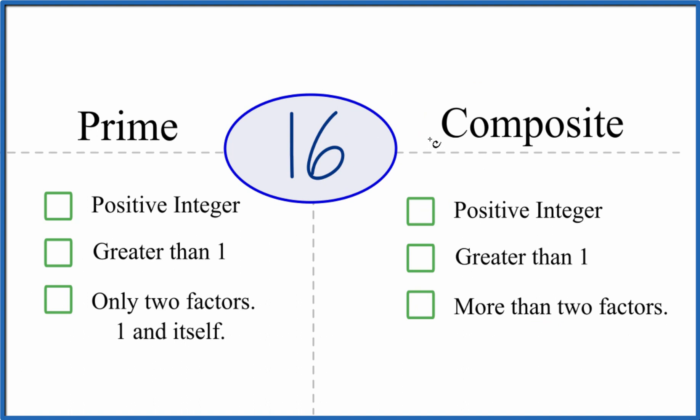First off, whenever you have an even number other than two, any other even number other than two, it's going to be composite. That's because we have a positive integer, it's greater than 1, and we're going to have more than two factors.